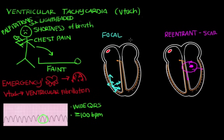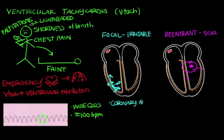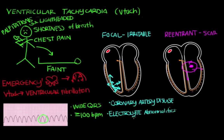When thinking about risk factors for VTAC, consider the two types. For focal VTAC, the question is what causes irritability of ventricular cells. A classic example is coronary artery disease, where blood vessels get clogged over time, depriving the heart of oxygenated blood and making ventricular cells irritated. Certain electrolyte abnormalities — such as high potassium, low calcium, or low magnesium — can also make ventricular cells unhappy, since electrolytes play a huge role in electrical conduction within the heart.